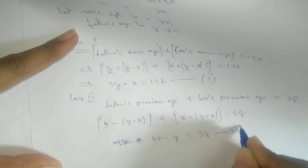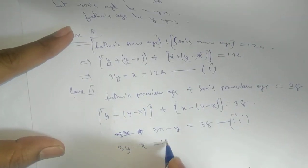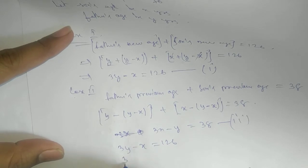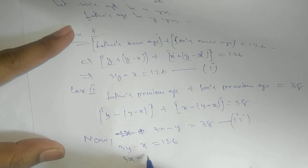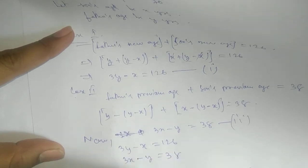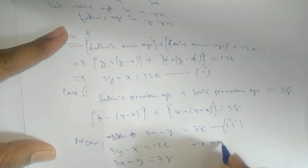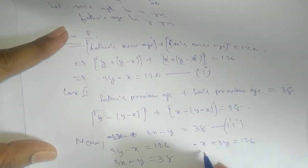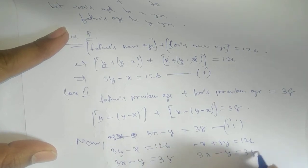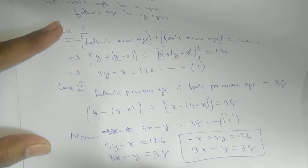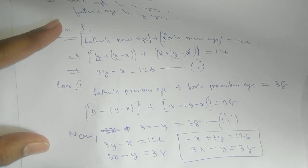Now we have the two equations: 3y − x = 126 (or equivalently −x + 3y = 126) and 3x − y = 38. Solve these two equations to get the required answer. Thank you.